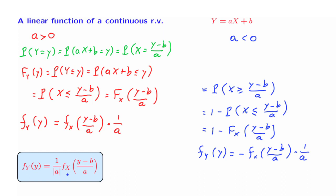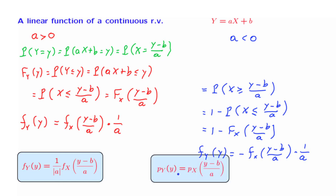We can unify the two formulas by replacing the occurrences of a and that minus sign with the absolute value of a. This gives us a single formula for the PDF of y in terms of the PDF of x, valid whether a is positive or negative. The factor of a corresponds to a horizontal scaling of the PDF by a, the term b corresponds to a horizontal shift, and the absolute value term corresponds to a vertical scaling to ensure the PDF integrates to 1. It is interesting to compare with the corresponding discrete formula: the discrete formula has exactly the same appearance, except that the vertical scaling factor is not present.